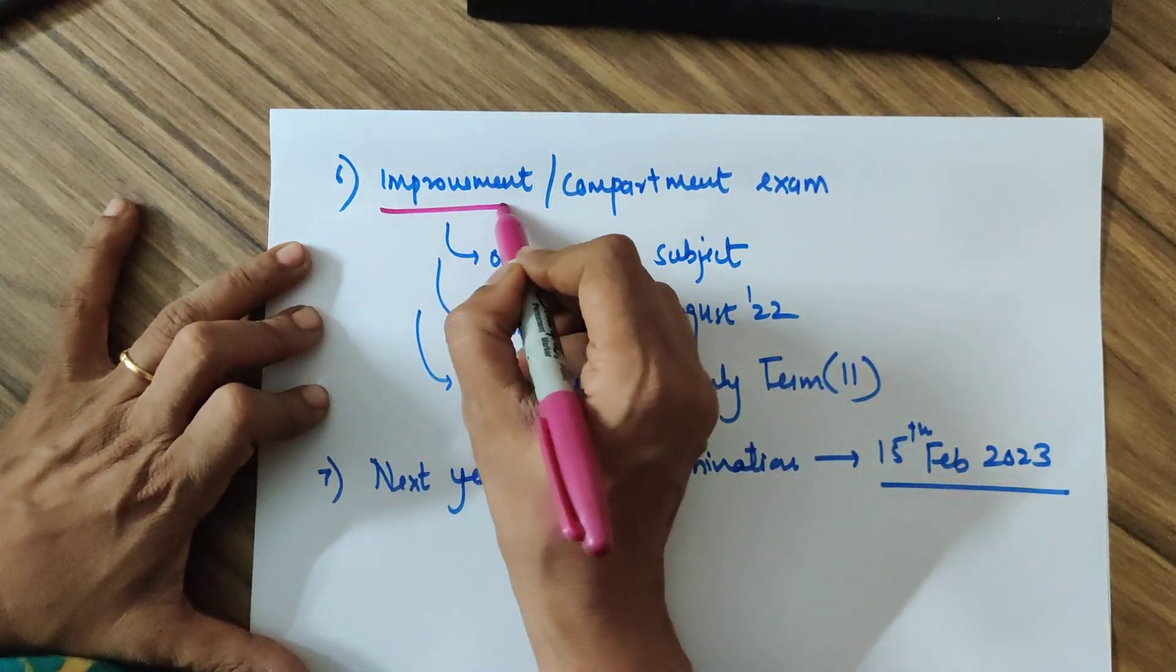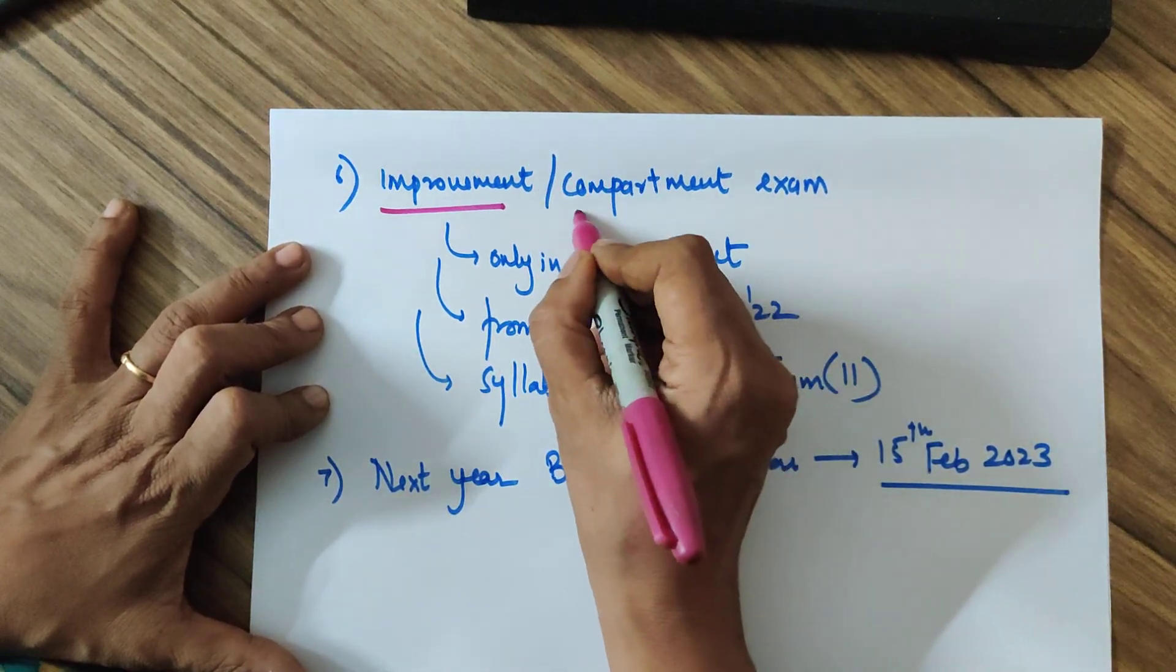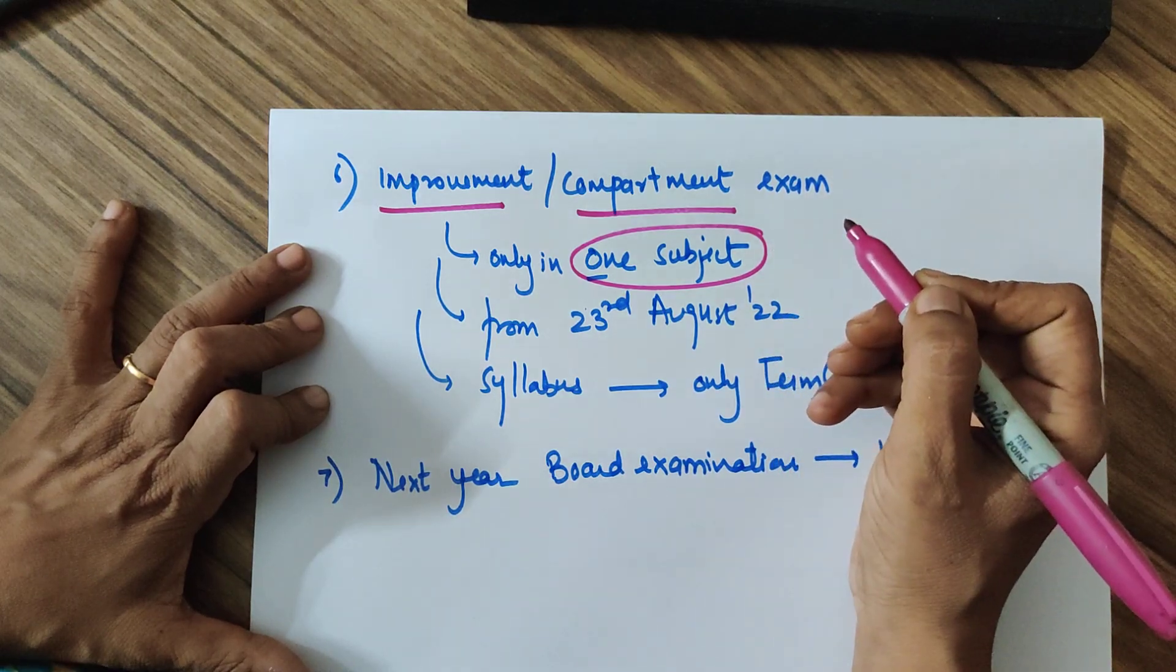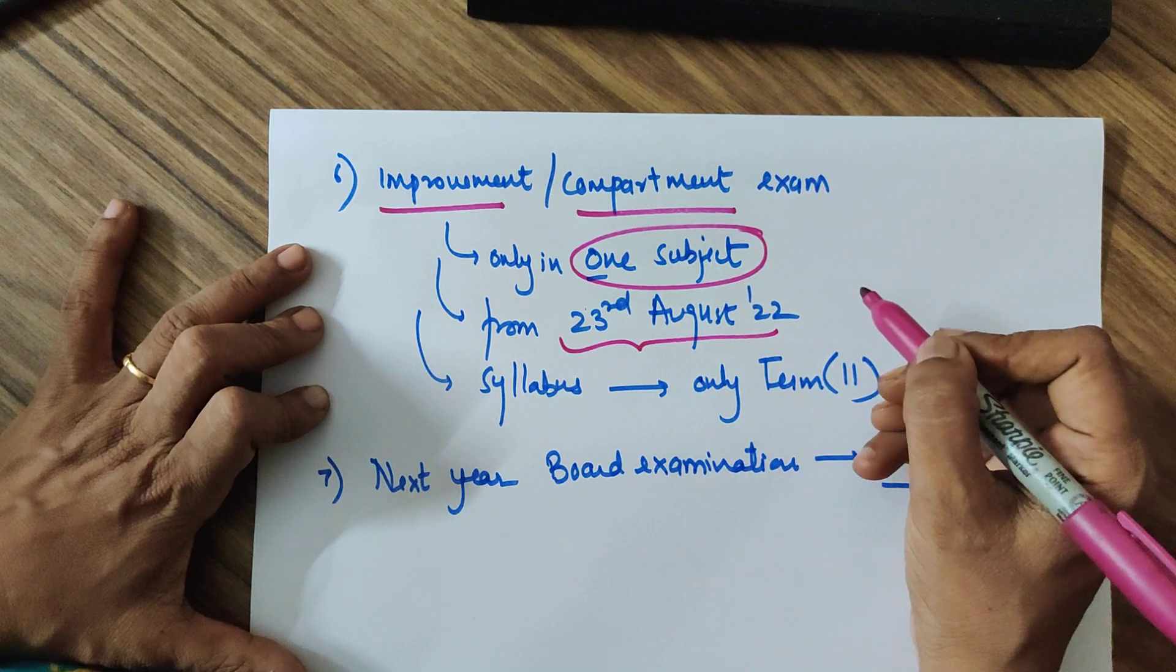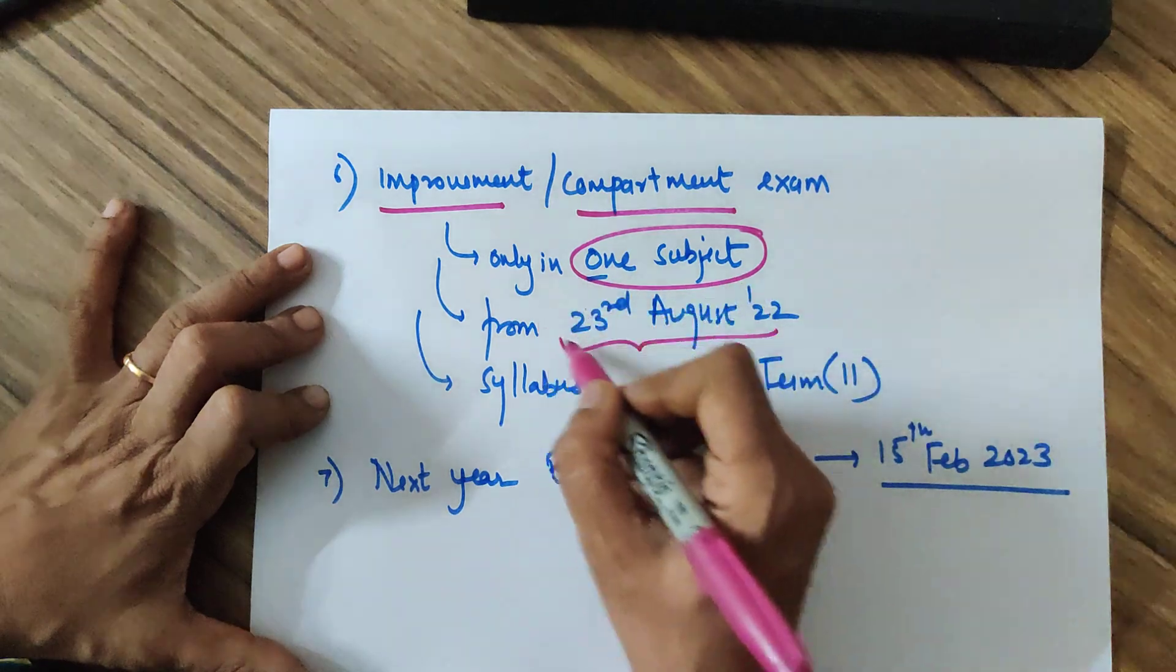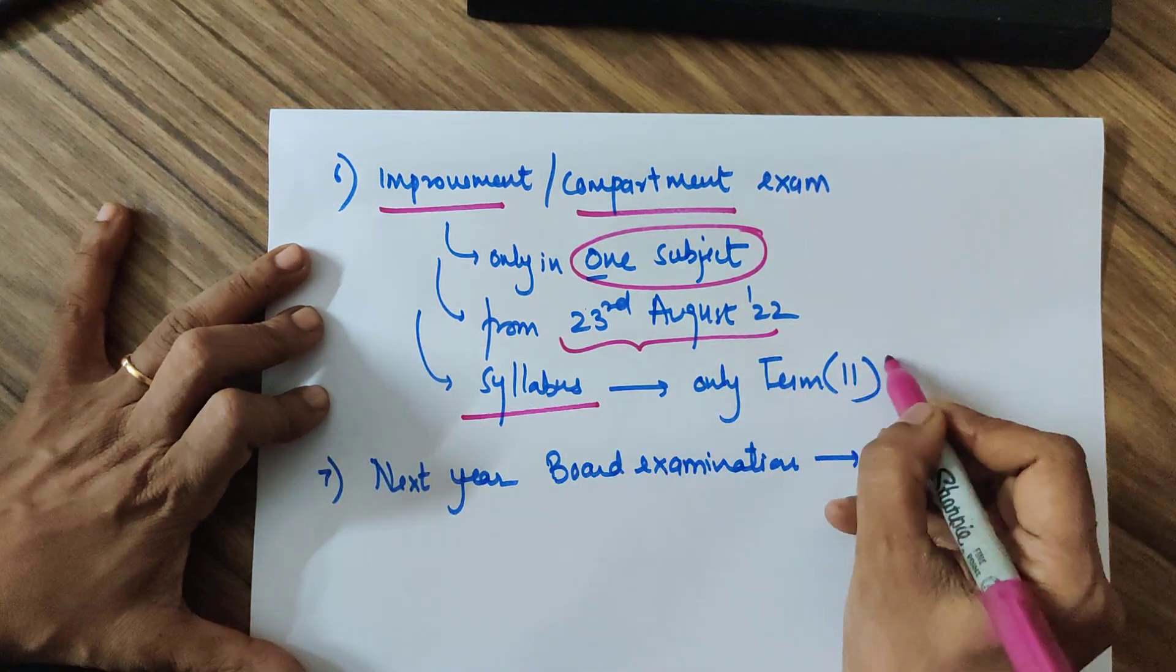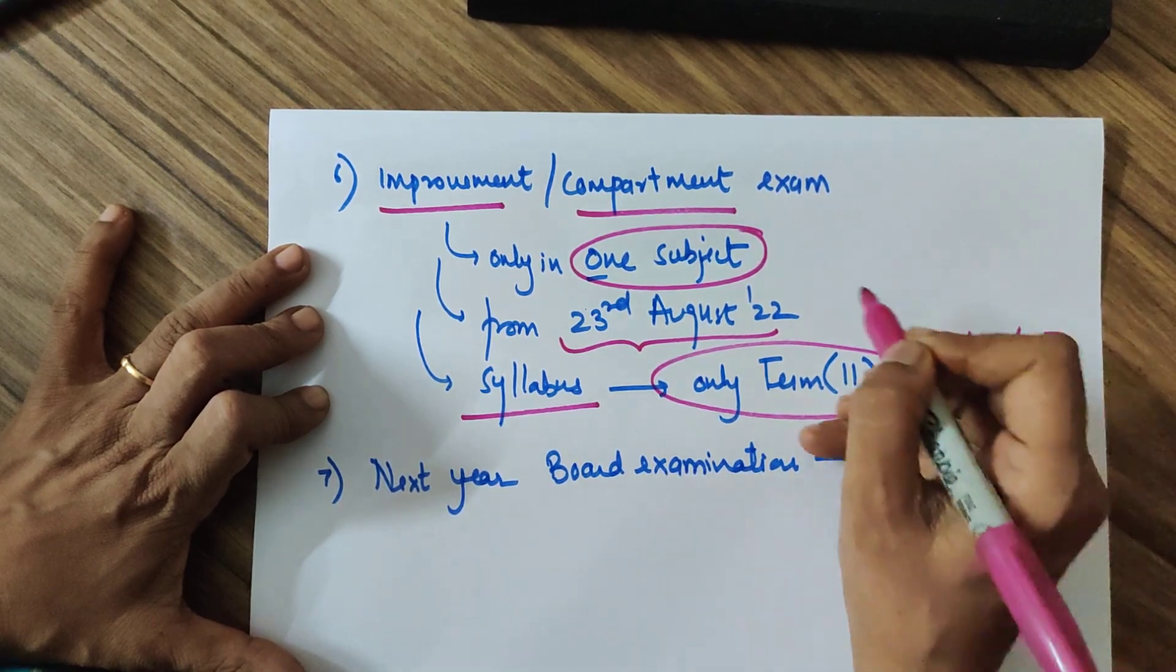Talking about the improvement exam, if you have a paper which is wrong or your compartment, then in that case you can only give one subject compartment exam. You can still start studying. One month ke aas paas se ye paper shuru ho jayenge aur aap ek hi paper de sakte hain. Syllabus kya hoga? Only Term 2, and the paper would be subjective. That is understandable.